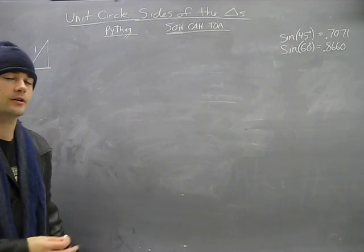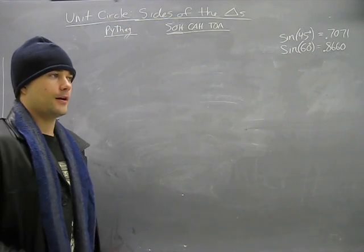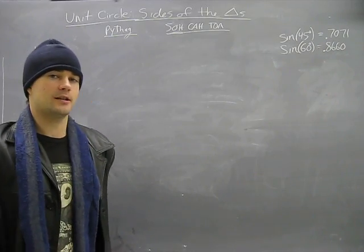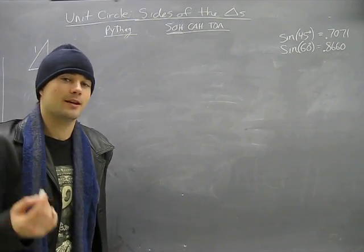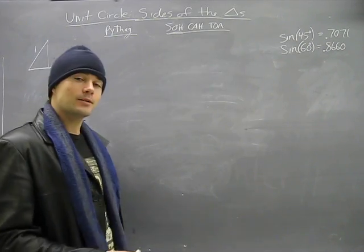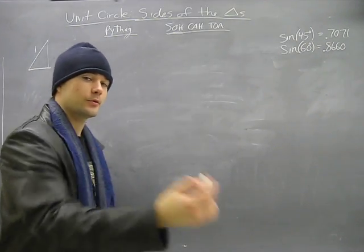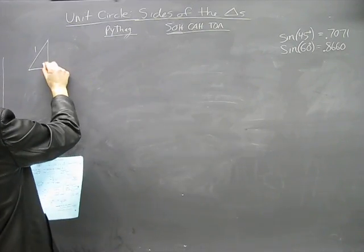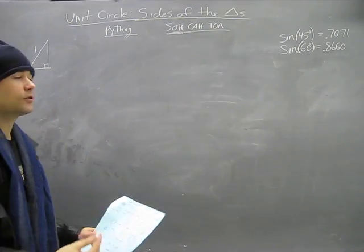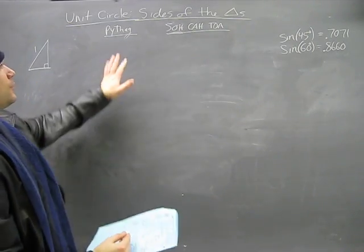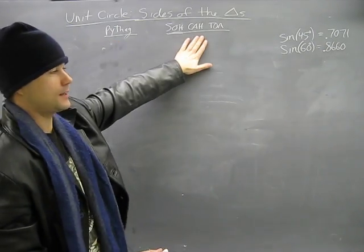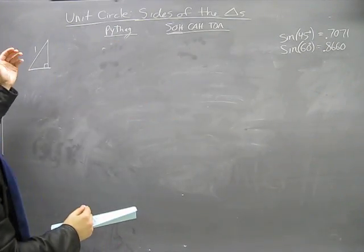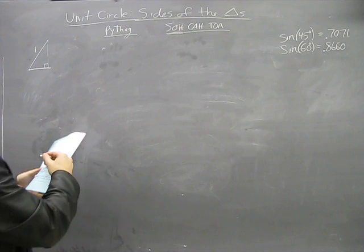All right, now how this one works — I don't want to say more complex or tricky, because it's not. It just maybe takes some more thinking, and that's what we're here to do. So we're going to think: we have a 90-degree triangle, so we can use the Pythagorean theorem and SOHCAHTOA. Let's start with SOHCAHTOA.